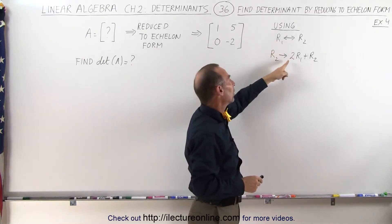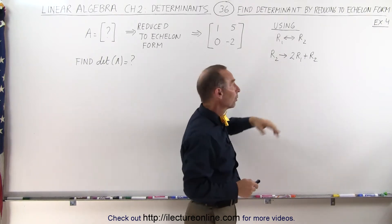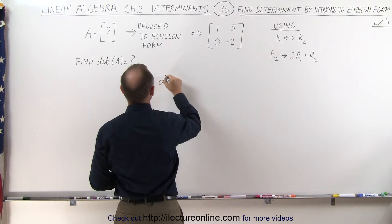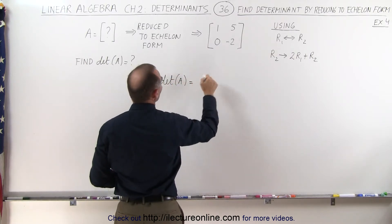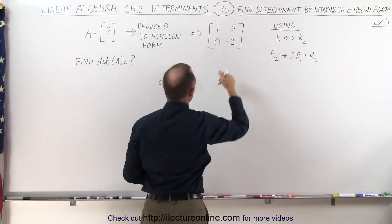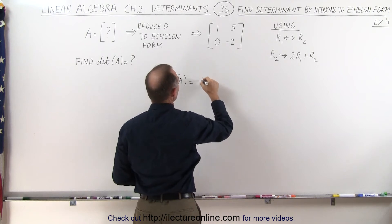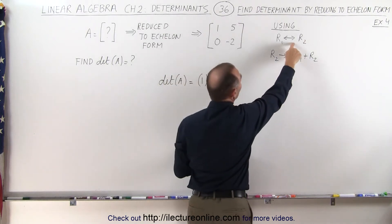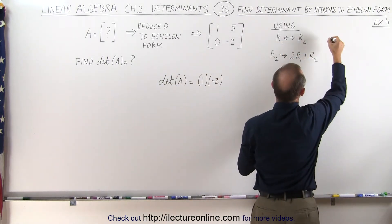And along the way, we did one row exchange and one addition of rows, which means that the answer, the determinant of A, is therefore equal to the product of the diagonals here in the echelon form, which is 1 times negative 2 multiplied times a negative 1 because of this process right here.